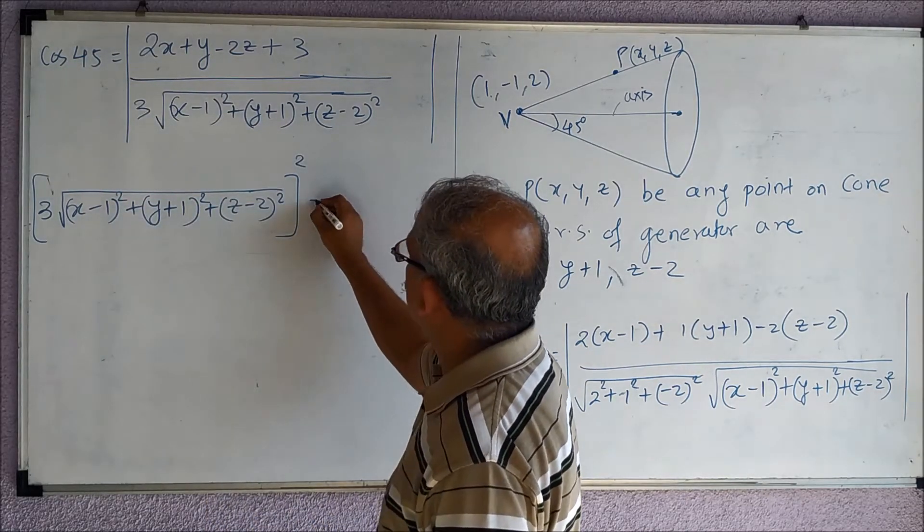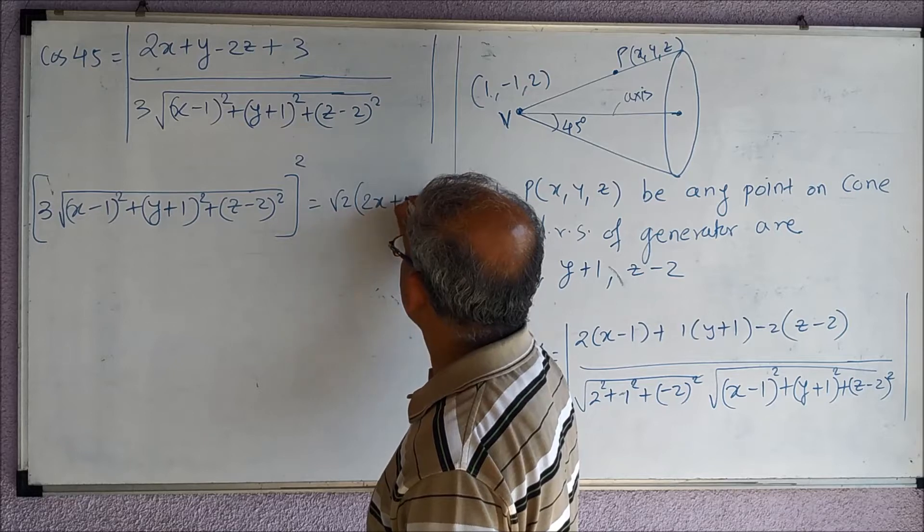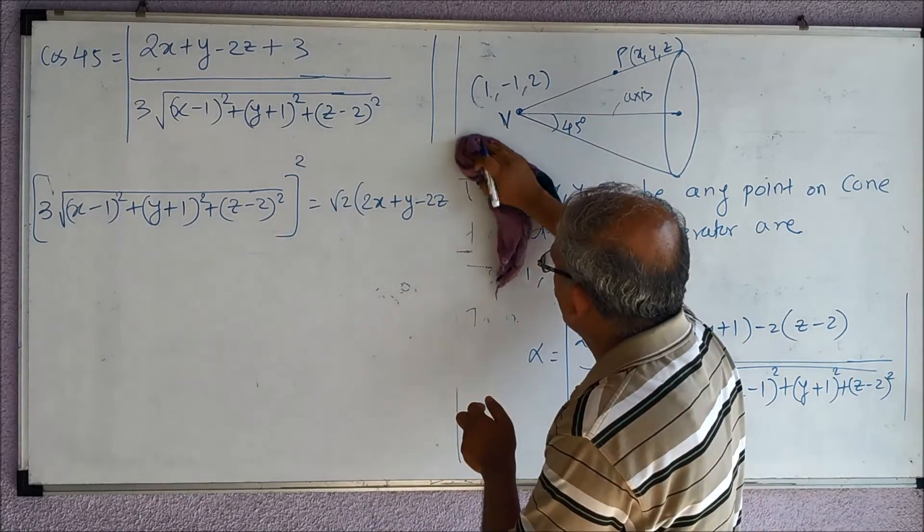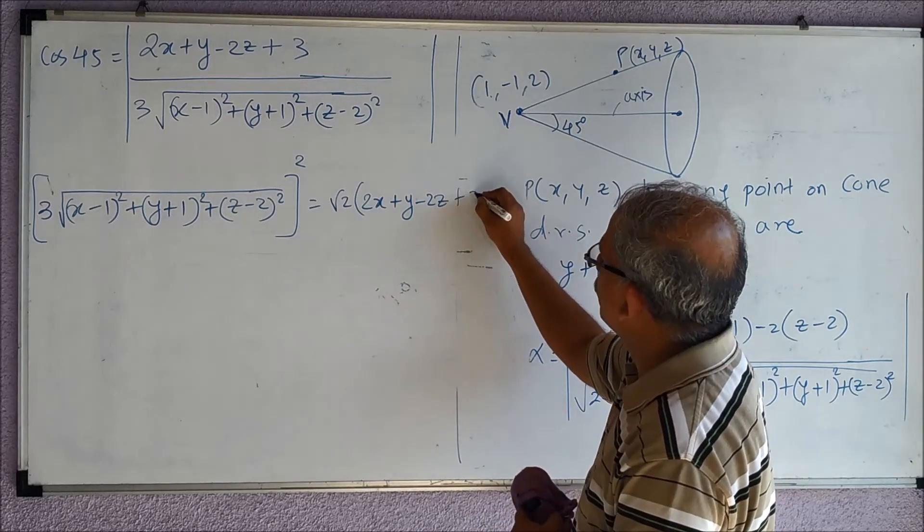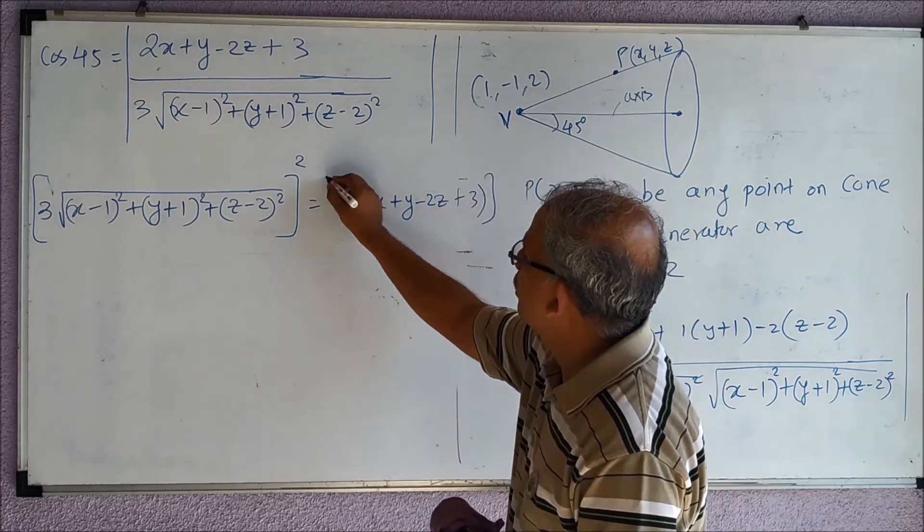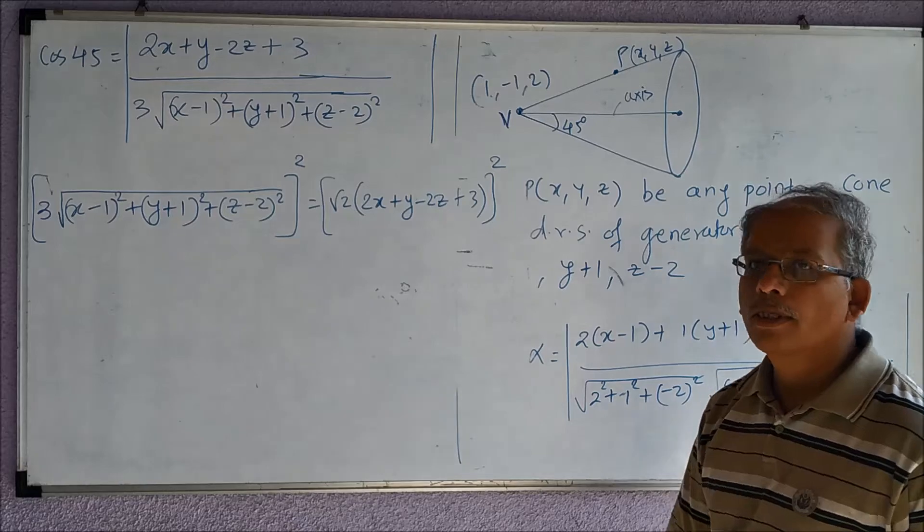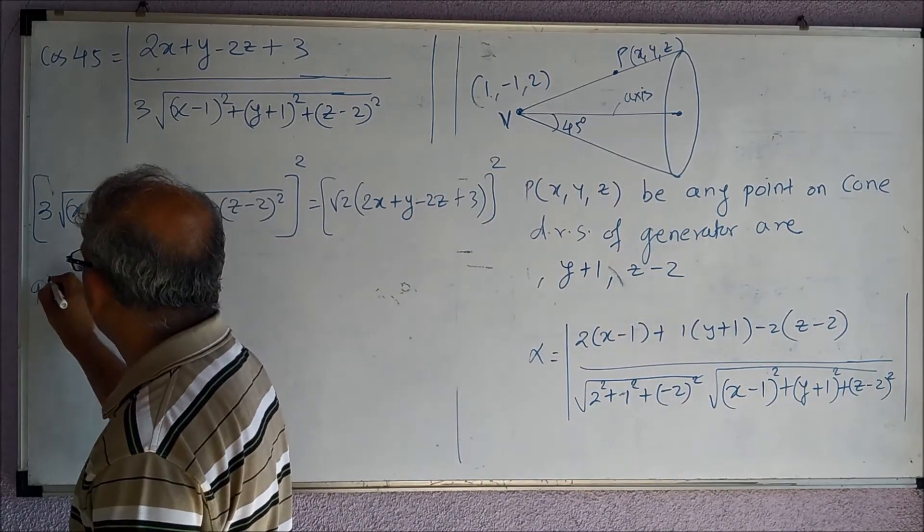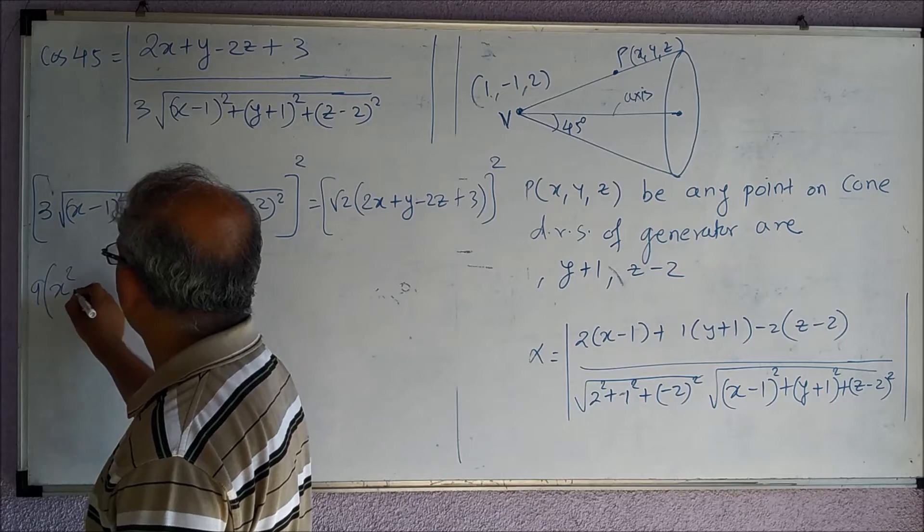...and I am going to square this, so I am cross-multiplying, this is 1/√2, so cross-multiplying is equal to √2(2x + y - 2z + 3)², right?